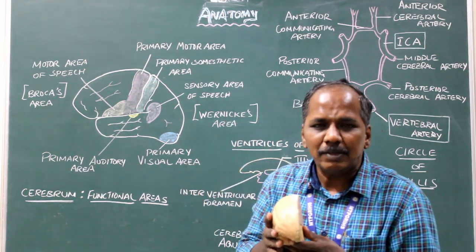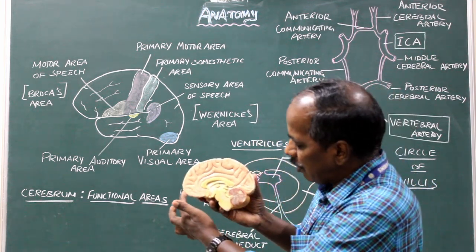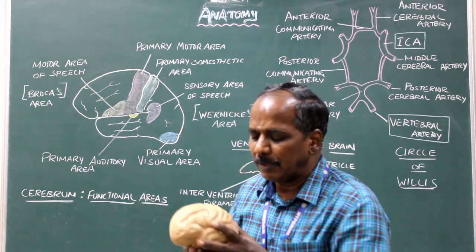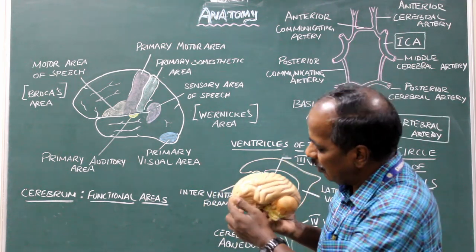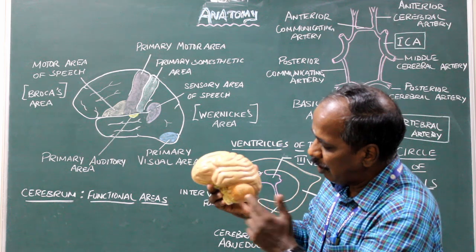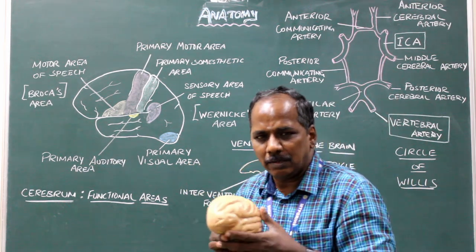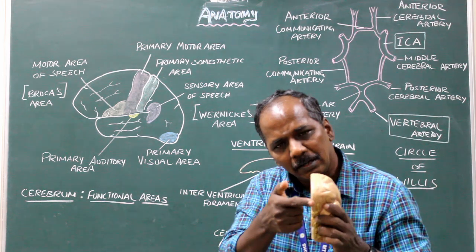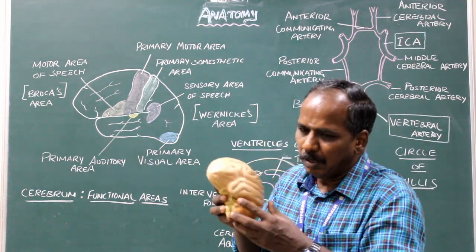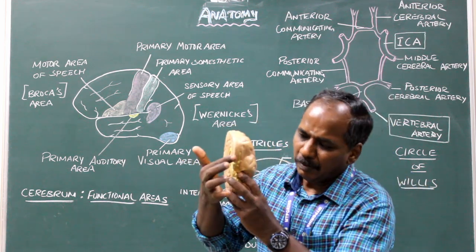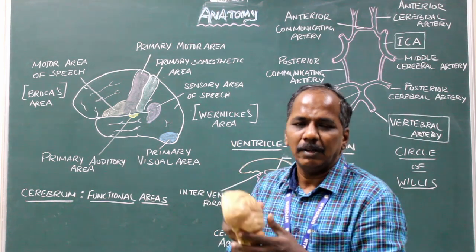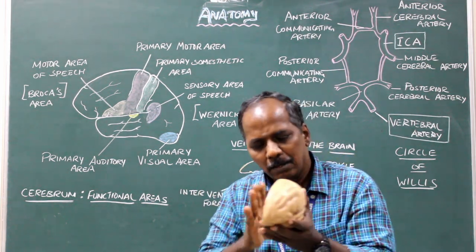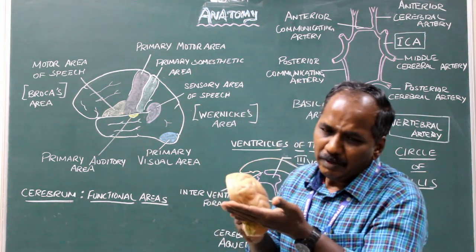Each cerebral hemisphere has three poles: frontal pole, occipital pole, and temporal pole. Three borders: supero-medial border, infero-medial border, and infero-lateral border. Three surfaces: supero-lateral surface, medial surface, and inferior surface.